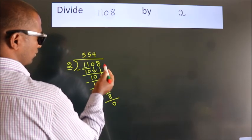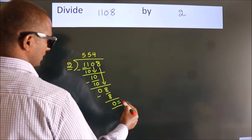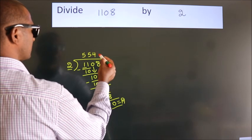After this, no more numbers to bring down. So we stop here. This is our remainder. This is our quotient.